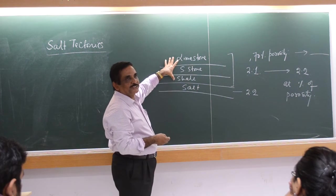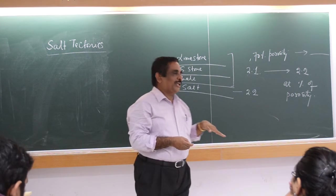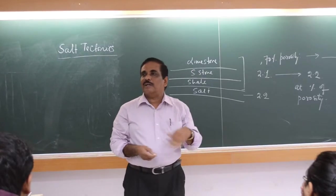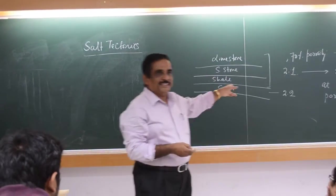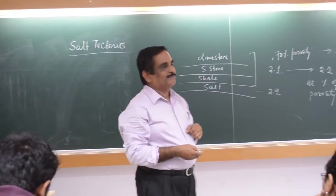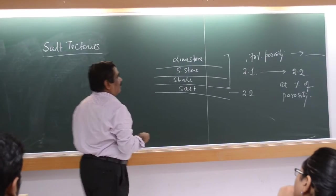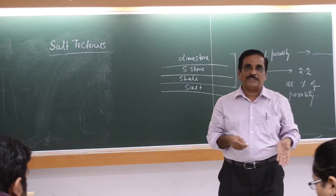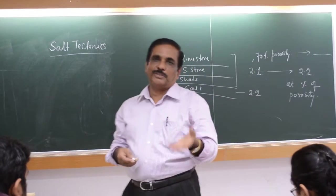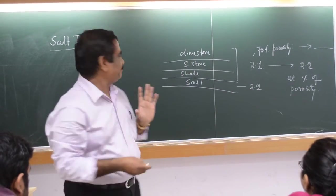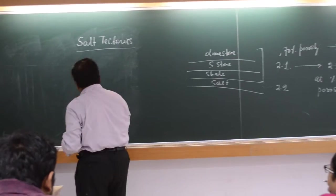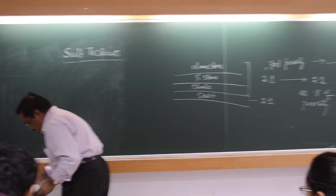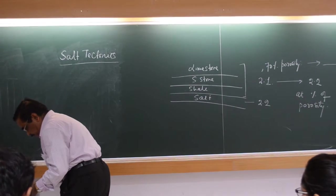This is lighter, so this is the normal sequence. Now, if you want to bring salt up, then this material has to become heavy by removal of the porosity. That is the assignment I had given to you — at what level of porosity, from 70 percent to what porosity it should become, so that the density becomes more than 2.1 or 2.2. Then what formula I have given? I am only going to open the file so that you will not make a mistake.